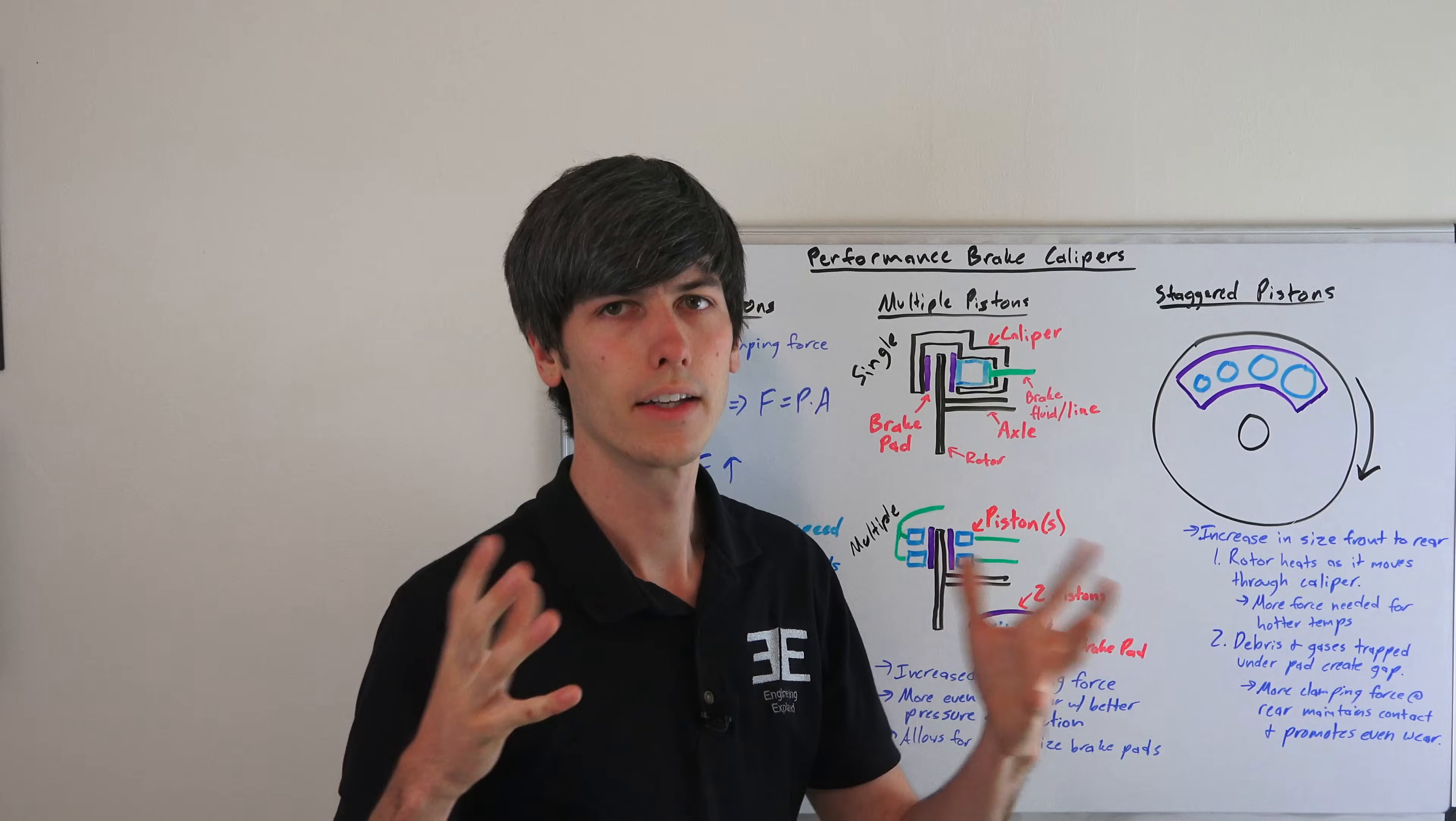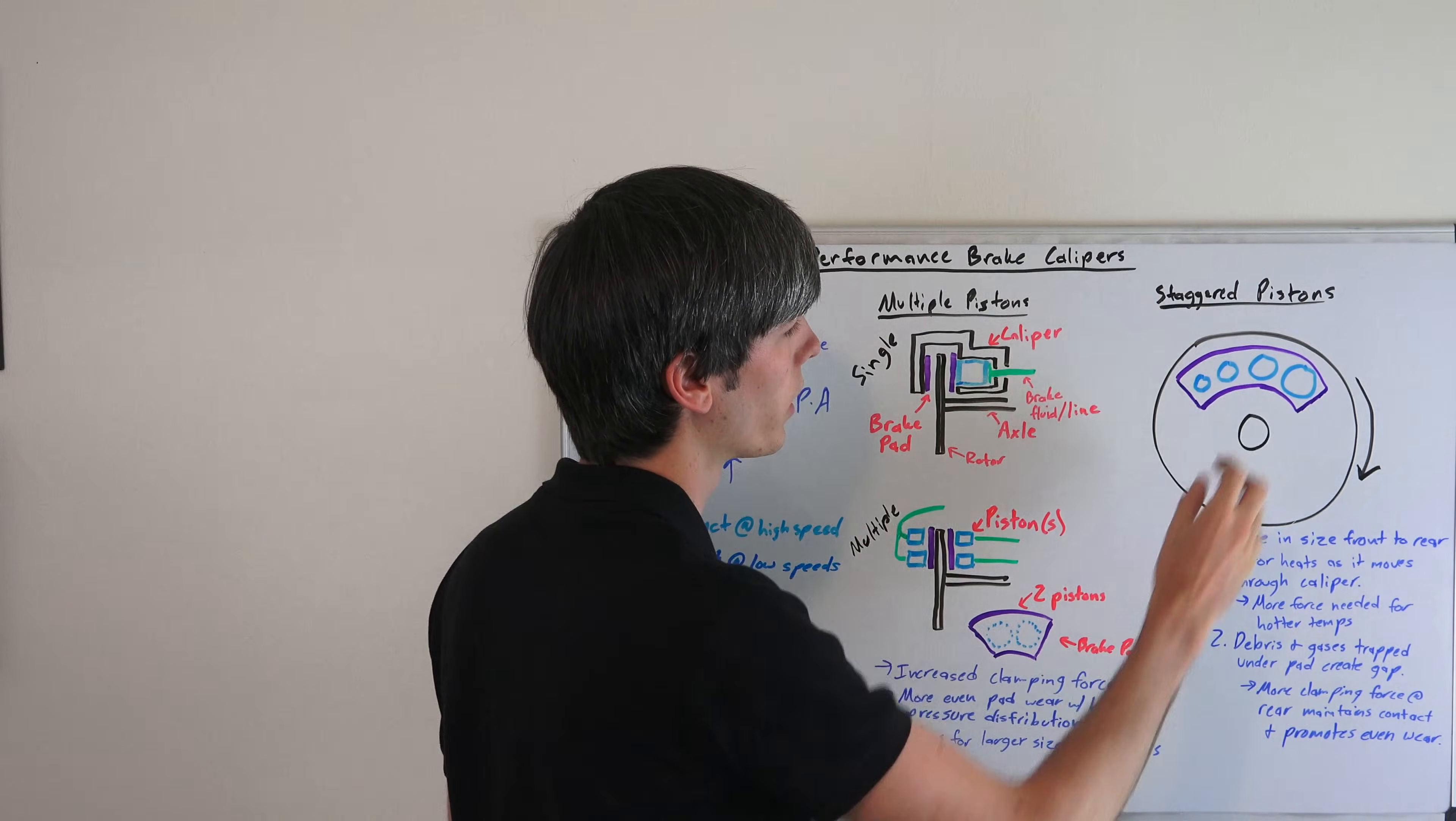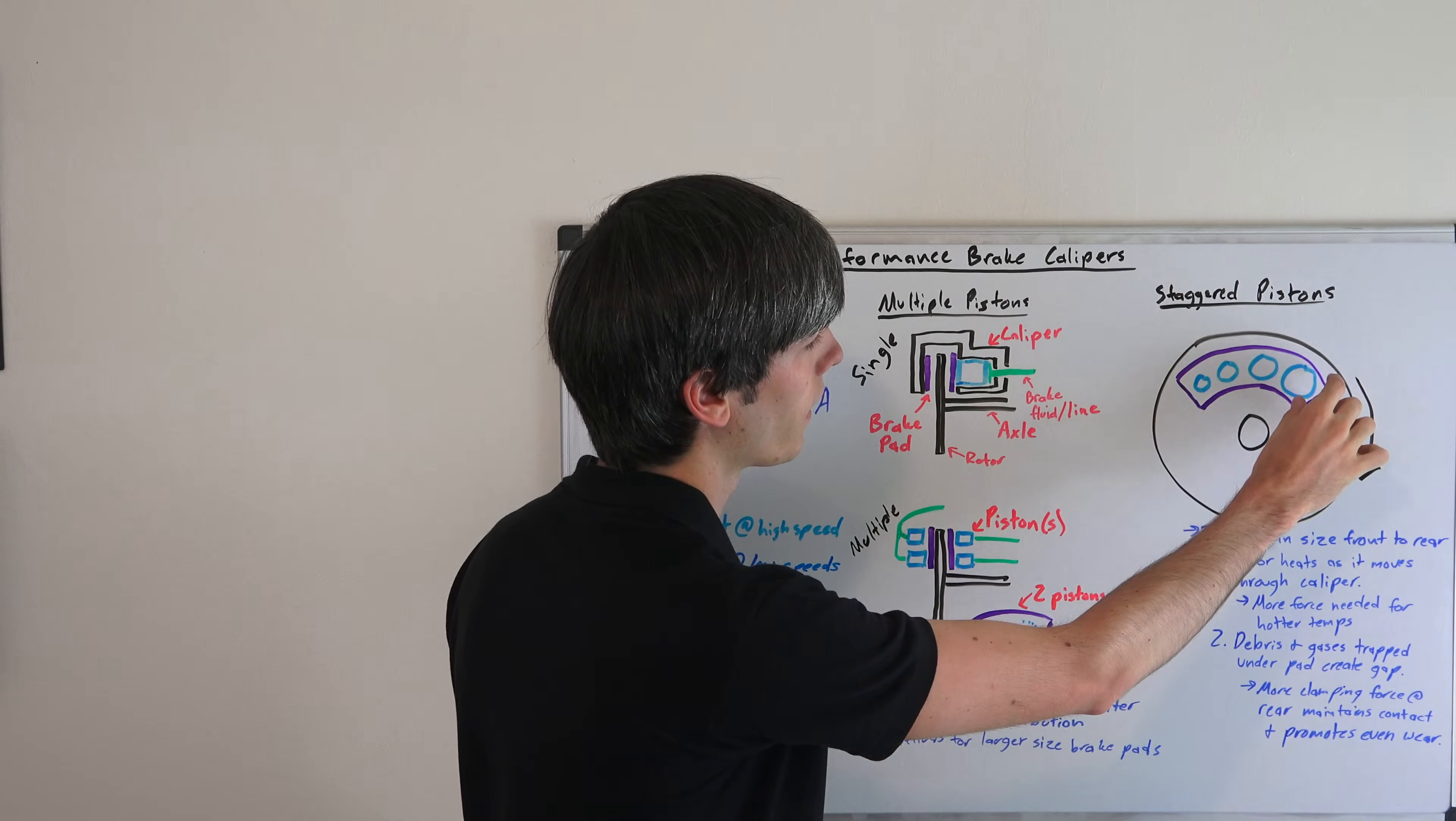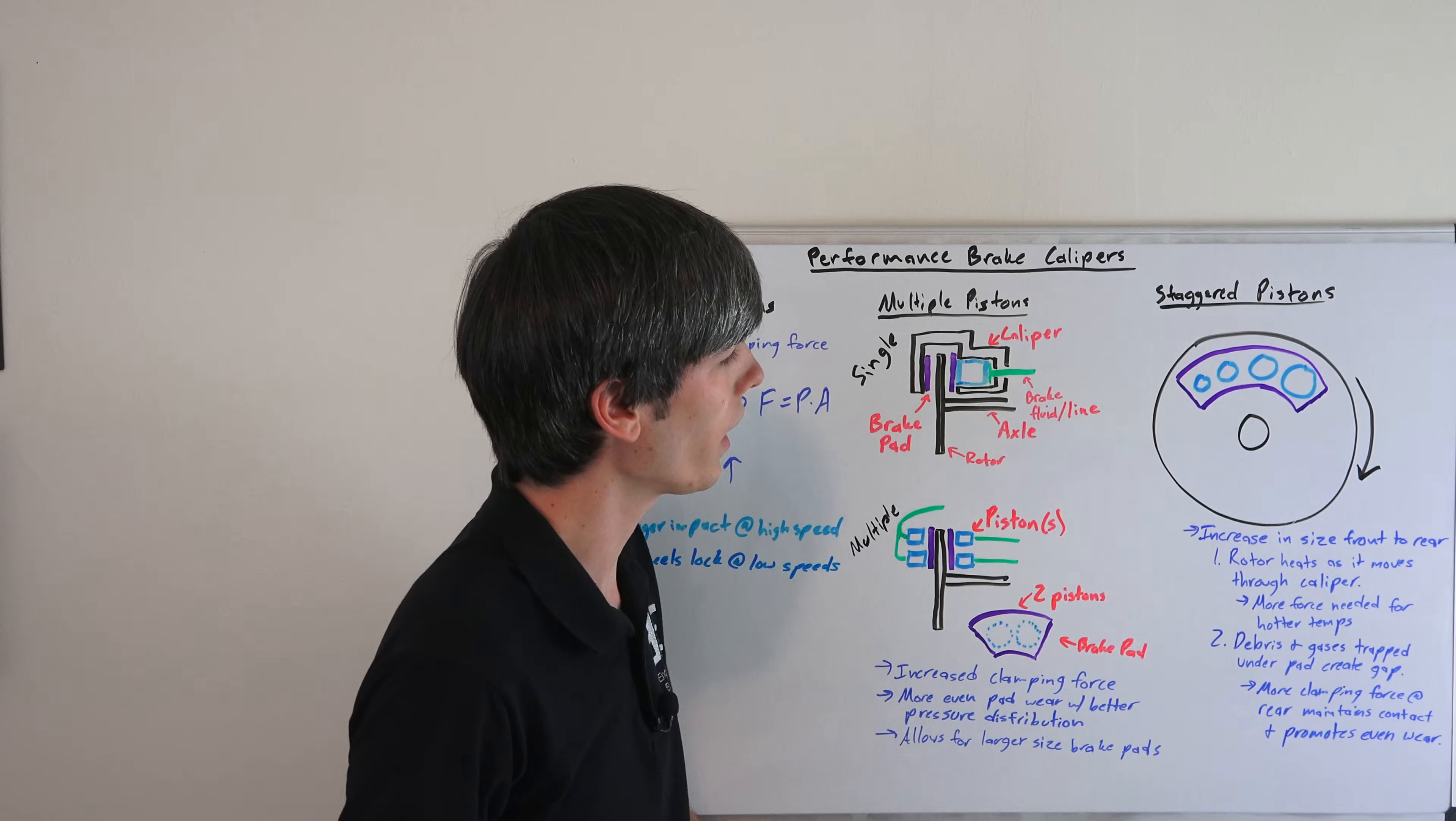Now moving on to staggered pistons. Essentially what you're doing is you're using different sized pistons as you move along from front to rear of the caliper. So the leading edge of where the rotor comes into contact with the brake pad, you'll have the smallest piston. And then the trailing edge, after it's already gone through the pad, you will have the largest piston. So why is this done?